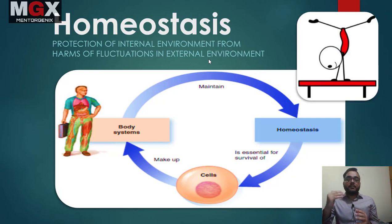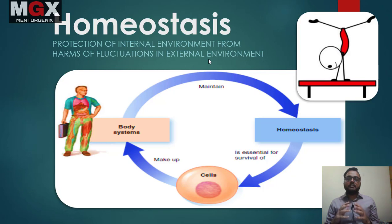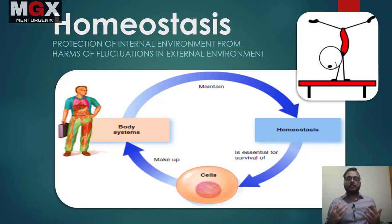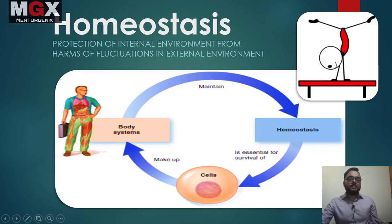For example, your body temperature is 37 degrees centigrade, and if the outside temperature is 50 degrees Celsius, this fluctuation can harm your body because our body's enzymes work at 37 degrees centigrade. If the outside temperature increases, it can affect our body. Our body maintains the internal environment through the blood vascular system, lymphatic system, and interstitial fluid.